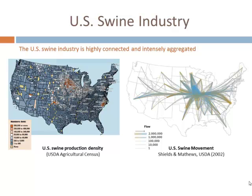This map shows data from the USDA's ERS — swine moving from state to state, so only interstate movement, ignoring the massive amount of intrastate movement. The blue ends of the curves are incoming, identifying the Midwest as a sink. The golden ends represent sources of movement, and the thicker the line, the larger the movement. This highlights how geographically distributed and intensely connected the swine industry is in the U.S.